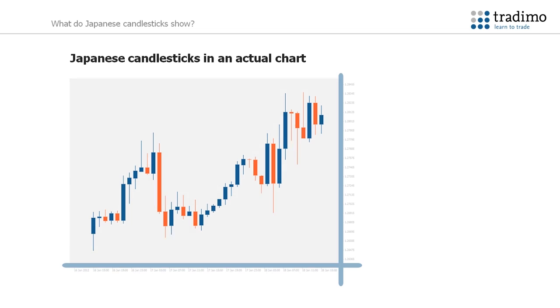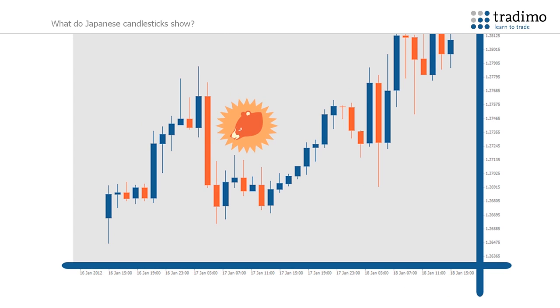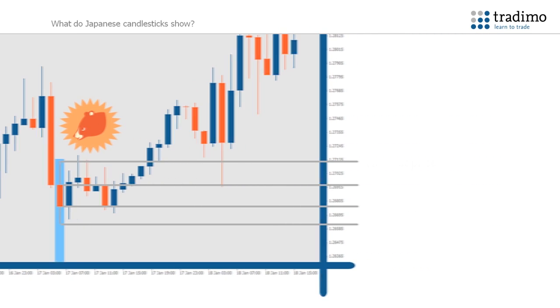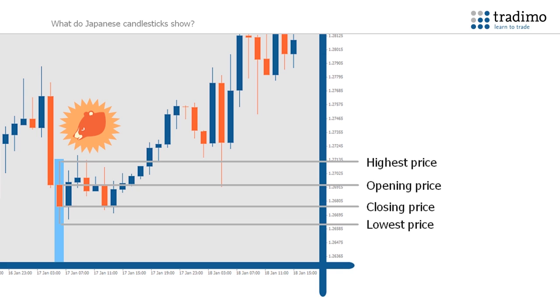Here you can see how it all relates to a real chart. You see the orange candles indicating that price has fallen during that period. Therefore, the opening price is at the top of the body and the closing price at the bottom of the body.